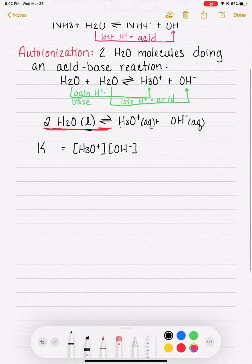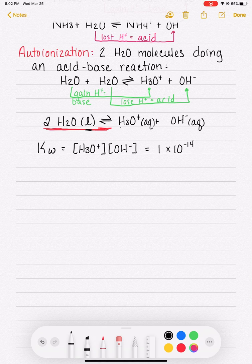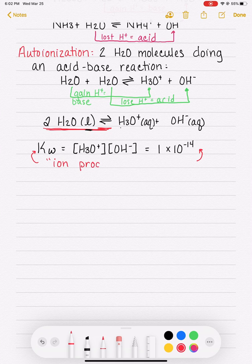This equilibrium expression is called KW, W for water. And this is equal to the value of the KW constant is equal to 1 times 10 to the minus 14. Some resources call this, this whole thing right here, the ion product of water.